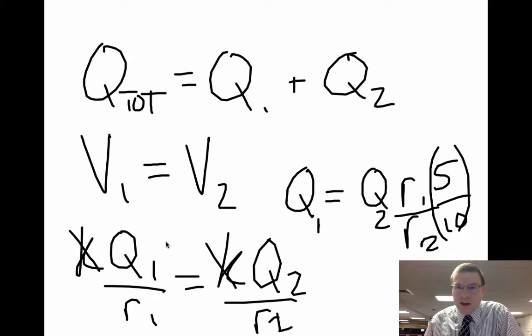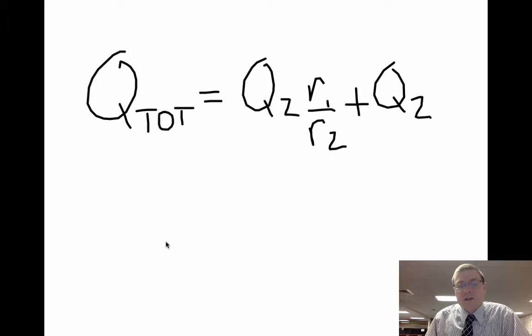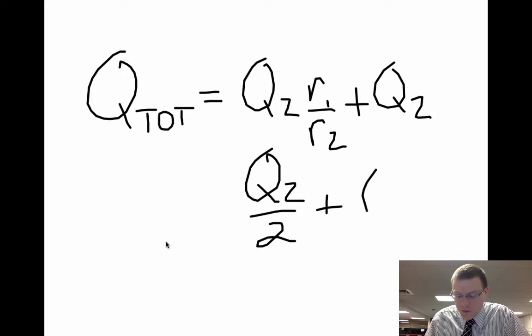So when I put that back into my formula, I put Q1 over here. So I now have total charge is Q2 R1 over R2 plus Q2. And since we know that this is really half of charge 2 plus charge 2, that means I've got about 3 halves charge 2.